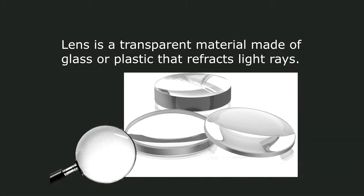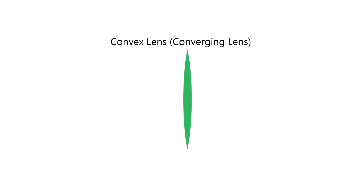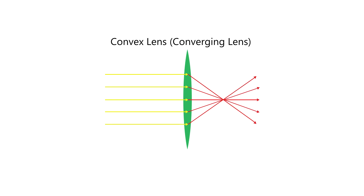There are two general types of lenses. One is a convex lens. A convex lens is thicker at the center and thinner at the edges. It is also called a converging lens because when light rays pass through it, the refracted rays converge at one point called the real focus. It forms real and virtual images depending on the location of the object from the lens.